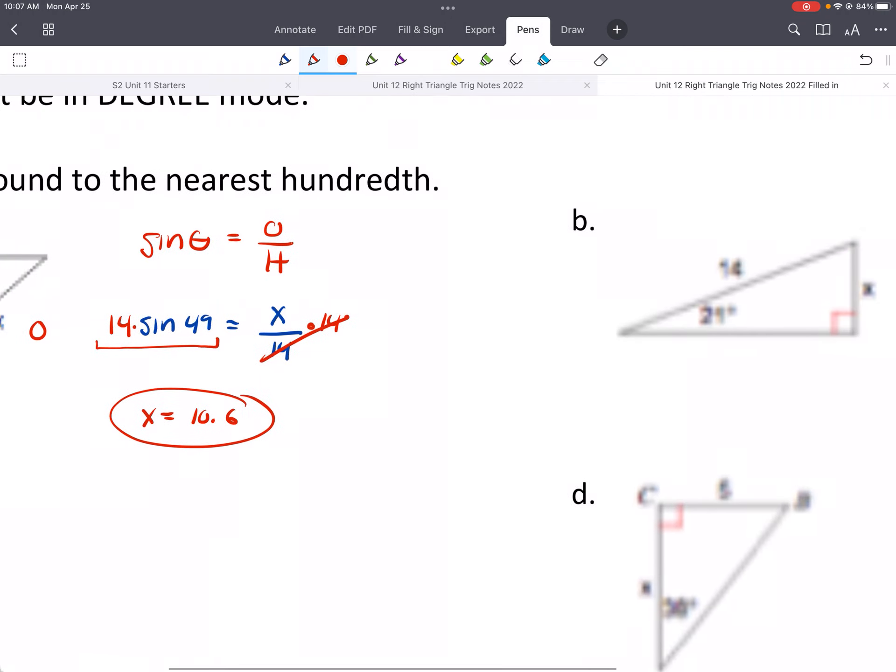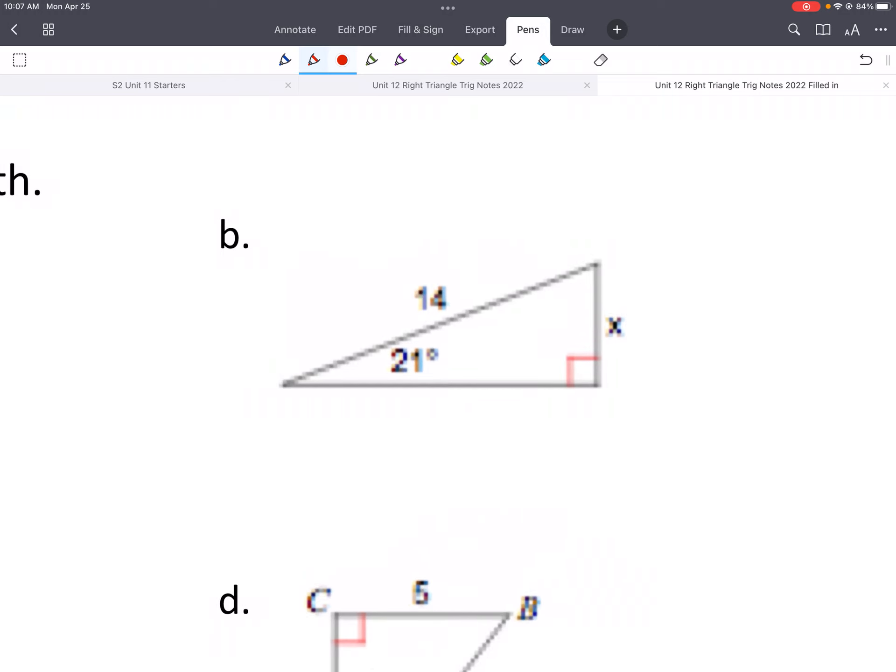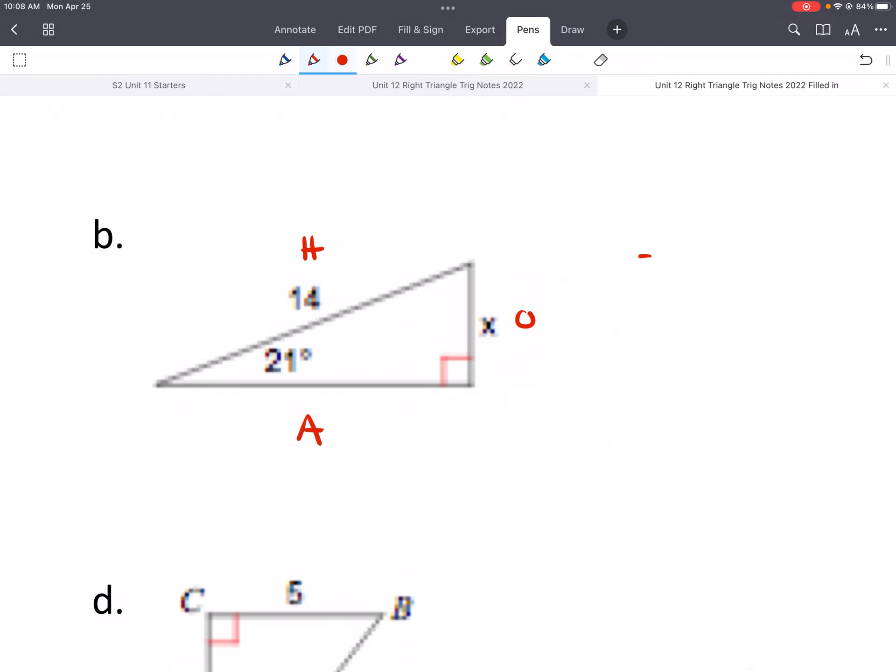All right, so there's an example. Let's try B. Again, we labeled our sides. So that's H, O, and A. What uses O and H? Well, that's sine. So sine of that angle is 21. And then sine uses O over H, so X over 14. So this is like the same. I think I skipped this in my previous class, but we'll just do it for the heck of it. We'll type that in. So 14 sine 21, and we end up getting X equals 5.0 if we round.